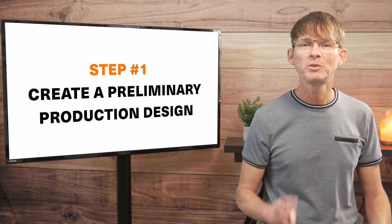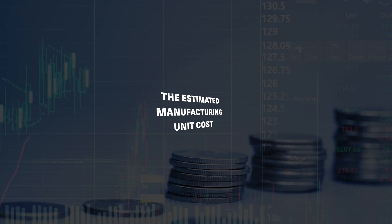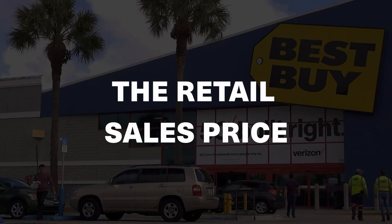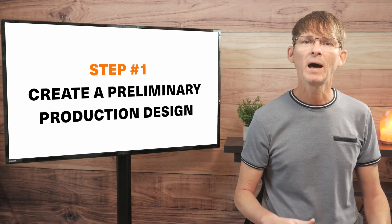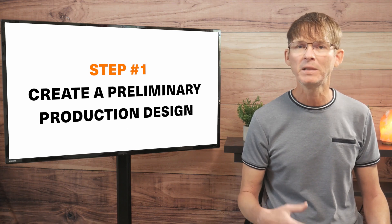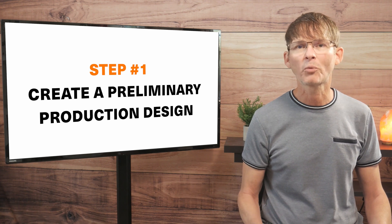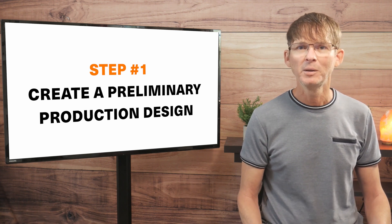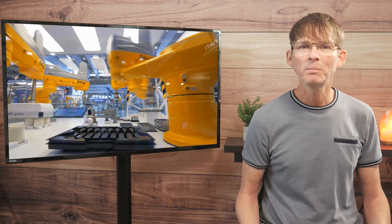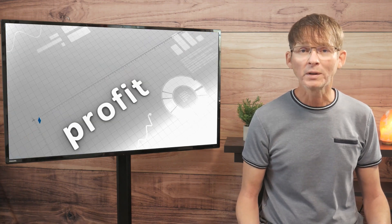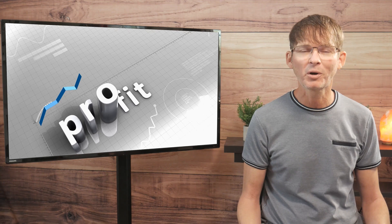To know if you can sell at a profit, you need two numbers: the estimated manufacturing unit cost, and your retail sales price. A lot of people make the mistake of skipping this preliminary production design step and jump right into full development. But you don't want to spend lots of effort and money on a product if it can't be realistically developed, manufactured, and most importantly, sold at a profit.